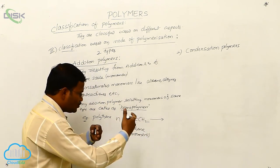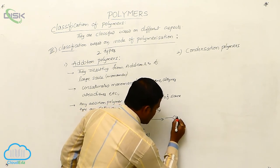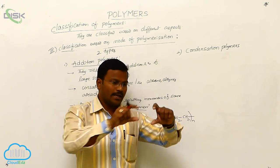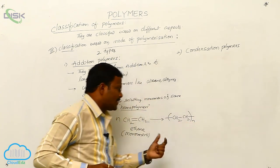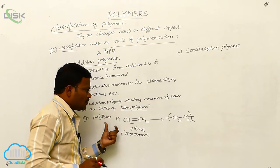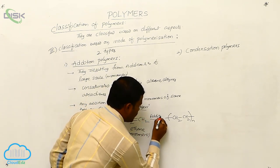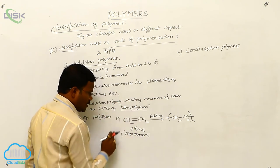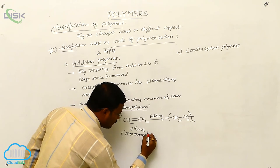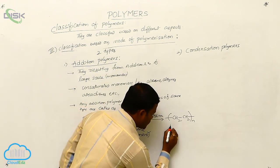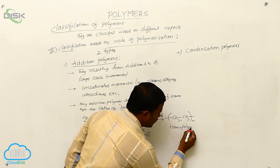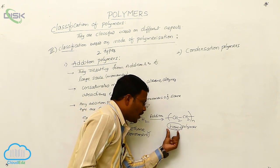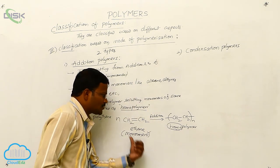An addition reaction occurs between the ethene molecules, and the result is a long –(CH2–CH2)n– chain linkage. This is an addition reaction, so the resulting polymer is called an addition polymer. Since it results from only one type of monomer, it is called a homopolymer. In Greek, 'homo' means same.